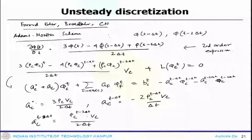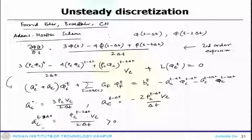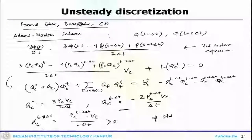It is clear that the coefficient at the previous time level has a positive sign, implying that an increase in that value leads to a decrease in φc. This scheme can be mitigated by the large coefficient which has the right influence. Therefore, this scheme is also stable and not bounded by any unphysical oscillations.